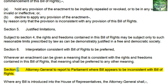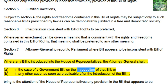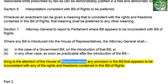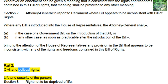Section 7: Attorney General to report to Parliament where a Bill appears to be inconsistent with the Bill of Rights. Where any Bill is introduced into the House of Representatives, the Attorney General shall, a. in the case of a government bill, on the introduction of that Bill, or b. in any other case, as soon as practicable after the introduction of the Bill, bring to the attention of the House of Representatives any provision in the Bill that appears to be inconsistent with any of the rights and freedoms contained in this Bill of Rights. Part 2: Civil and Political Rights.